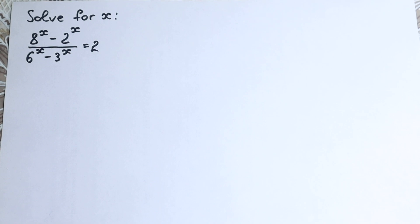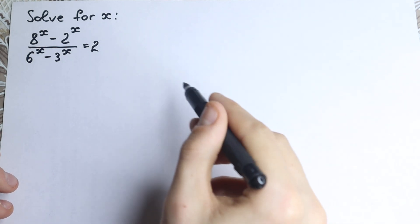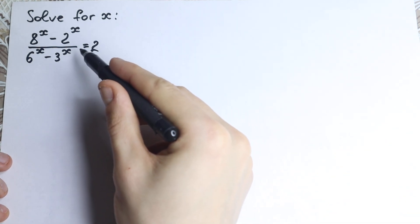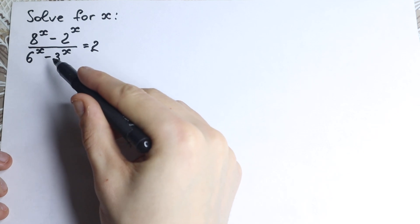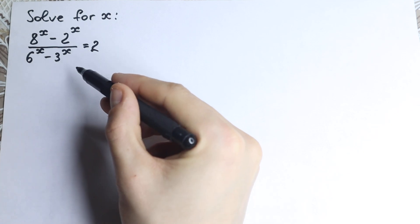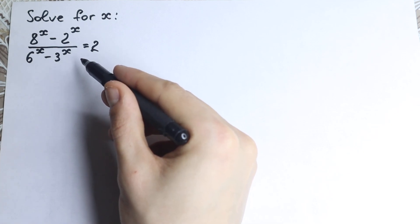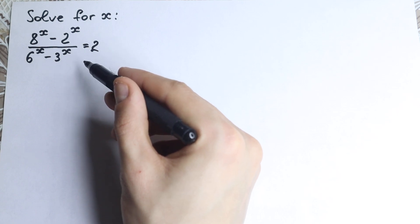Hello everyone, happy to see you here and welcome back to my channel, Higher Mathematics. In this video we are going to solve this really interesting exponential equation: 8 to the x minus 2 to the x, all over 6 to the x minus 3 to the x, equal to 2. This is our exponential equation and we need to find x.